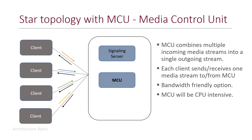Replacing the SFU with an MCU — a Media Control Unit — changes the approach. An MCU combines multiple incoming media streams into a single outgoing stream. Each client sends and receives only one media stream to and from the MCU. This is a bandwidth-friendly option since every client deals with just two streams: one outgoing and one incoming. Of course, MCUs need to be powerful and will be CPU-intensive machines.